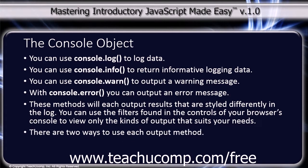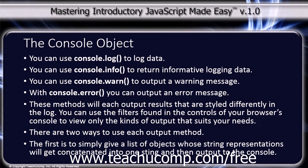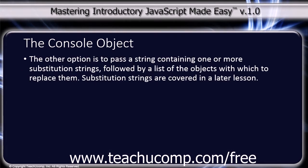There are two ways that you can use each output method. The first is to simply give a list of objects whose string representations will get concatenated into one string and then output to the console. The other option is to pass a string containing one or more substitution strings followed by a list of the objects with which to replace them. Substitution strings are covered in a later lesson.